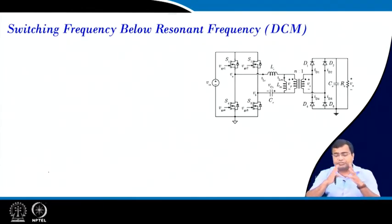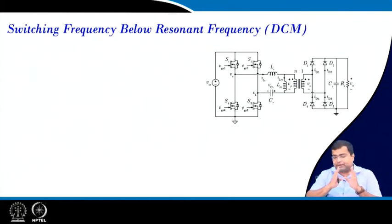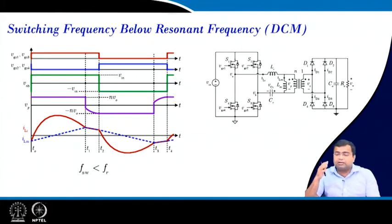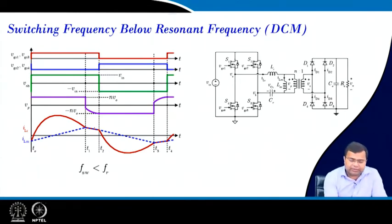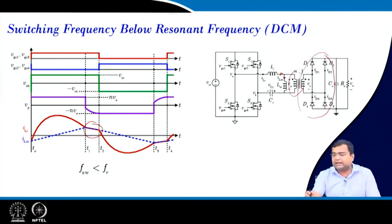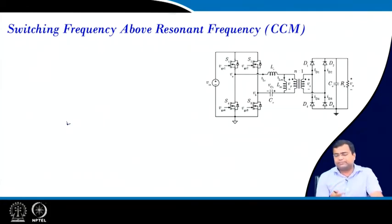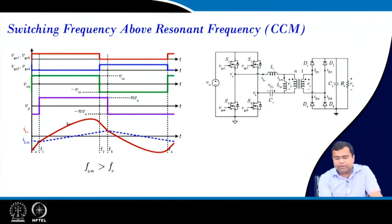In a resonant LLC converter, the operating frequency changes depending on the power level. When the power level decreases, the switching frequency decreases below the resonant frequency. During the condition when the resonant tank current equals the magnetizing current, no current flows in the primary path — the diode does not conduct and the output side behaves like an autonomous resonant circuit during that interval. At higher load, the switching frequency goes above the resonant frequency.